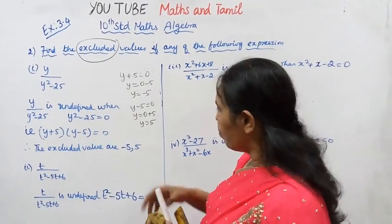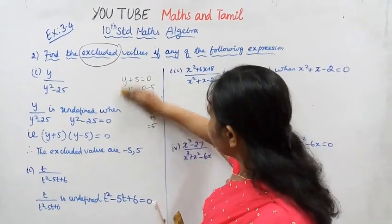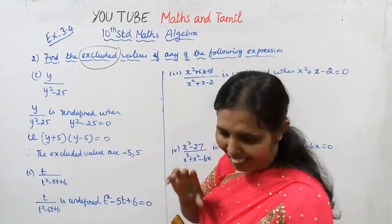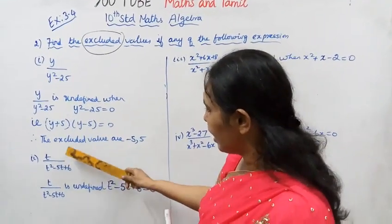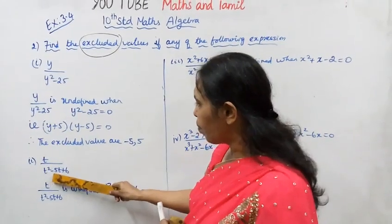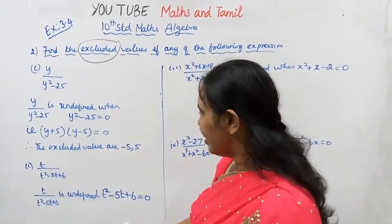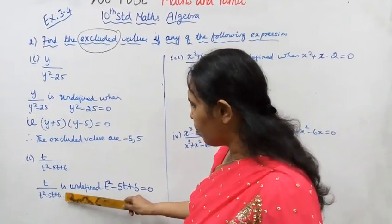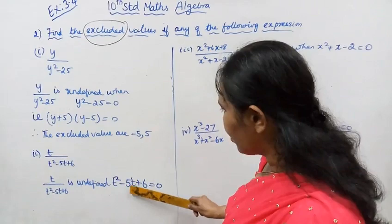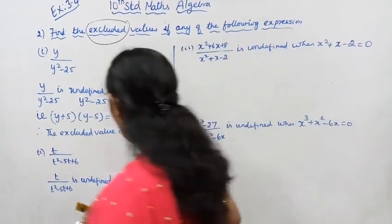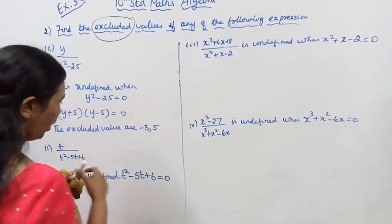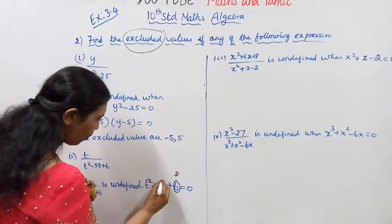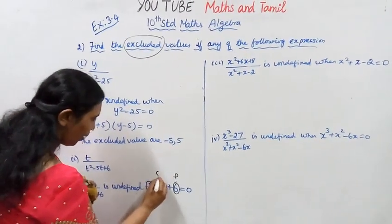The excluded values are minus 5 and plus 5. Now the second problem: t divided by t squared minus 5t plus 6. The denominator t squared minus 5t plus 6 equals zero. We need product equal to 6 and sum equal to minus 5.